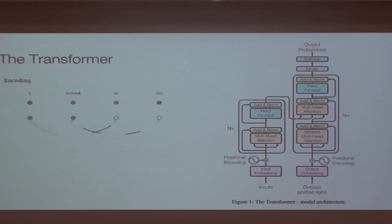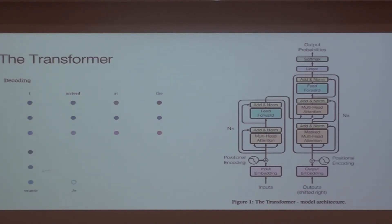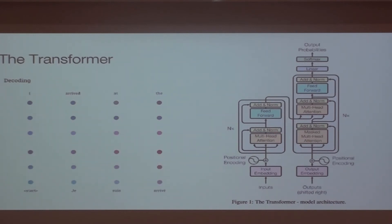The feed-forward layer is just a linear layer per position: at every position it multiplies by a large matrix, then applies a ReLU non-linearity. In TensorFlow, this is tf.layers.dense. Similarly, generating queries, keys, and values is also tf.layers.dense.